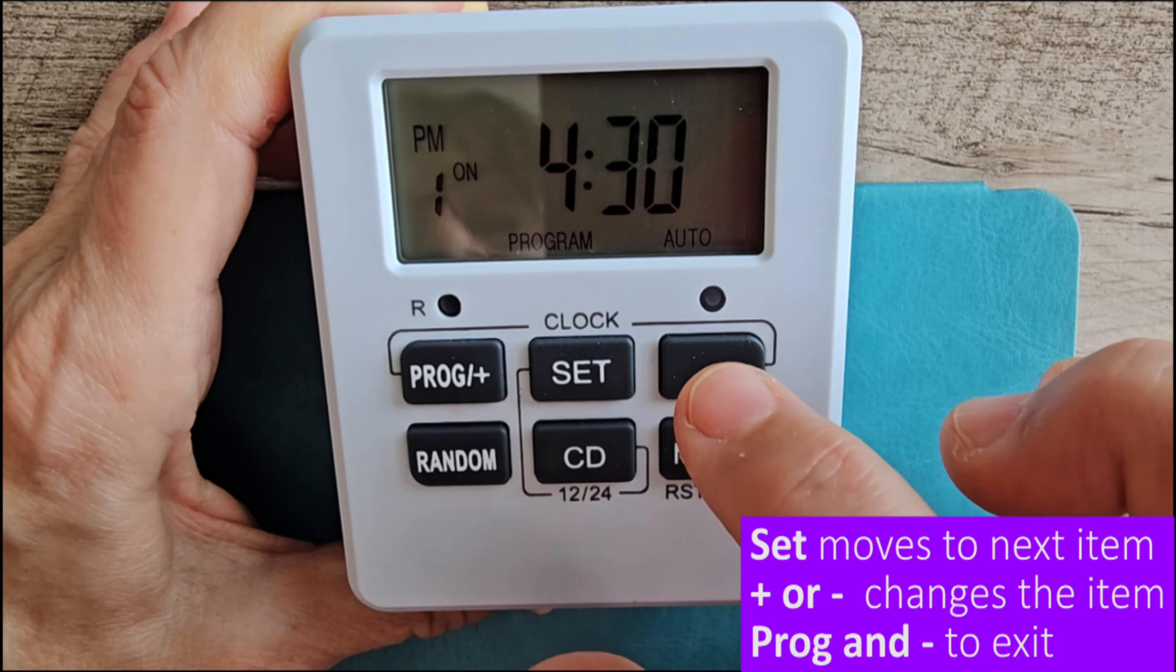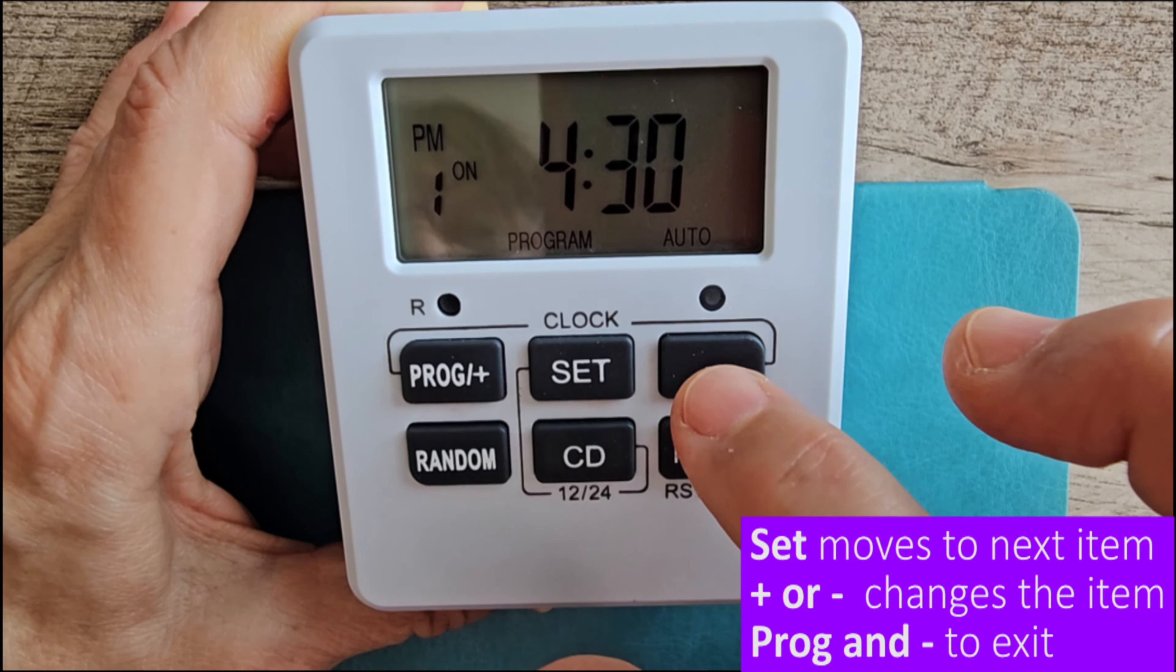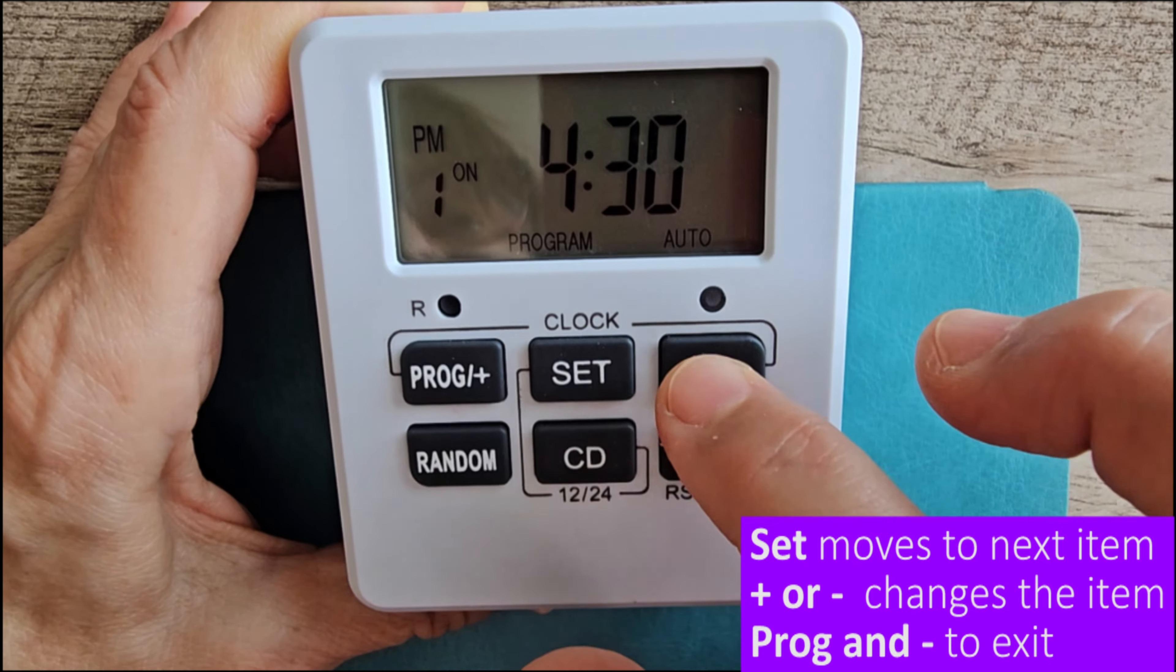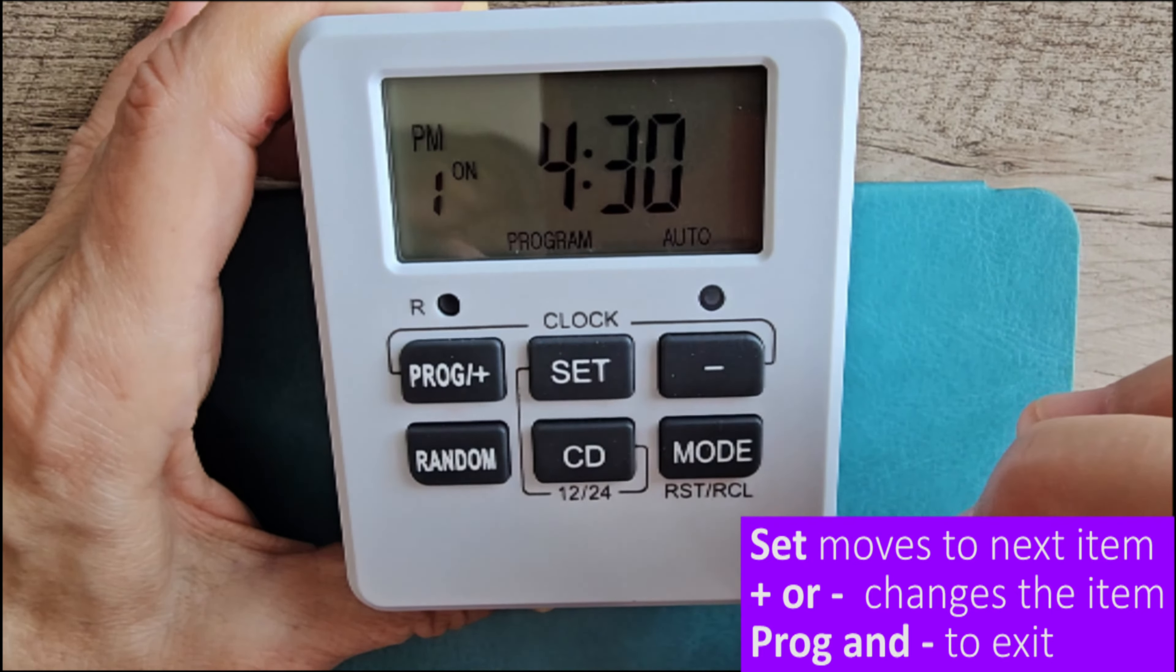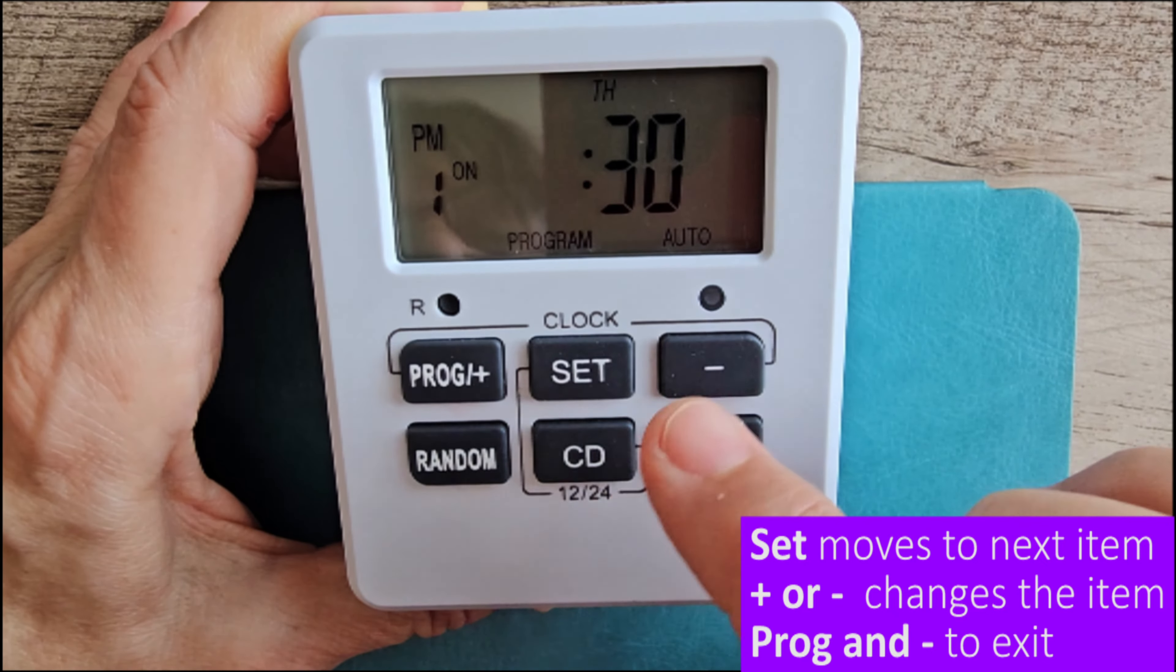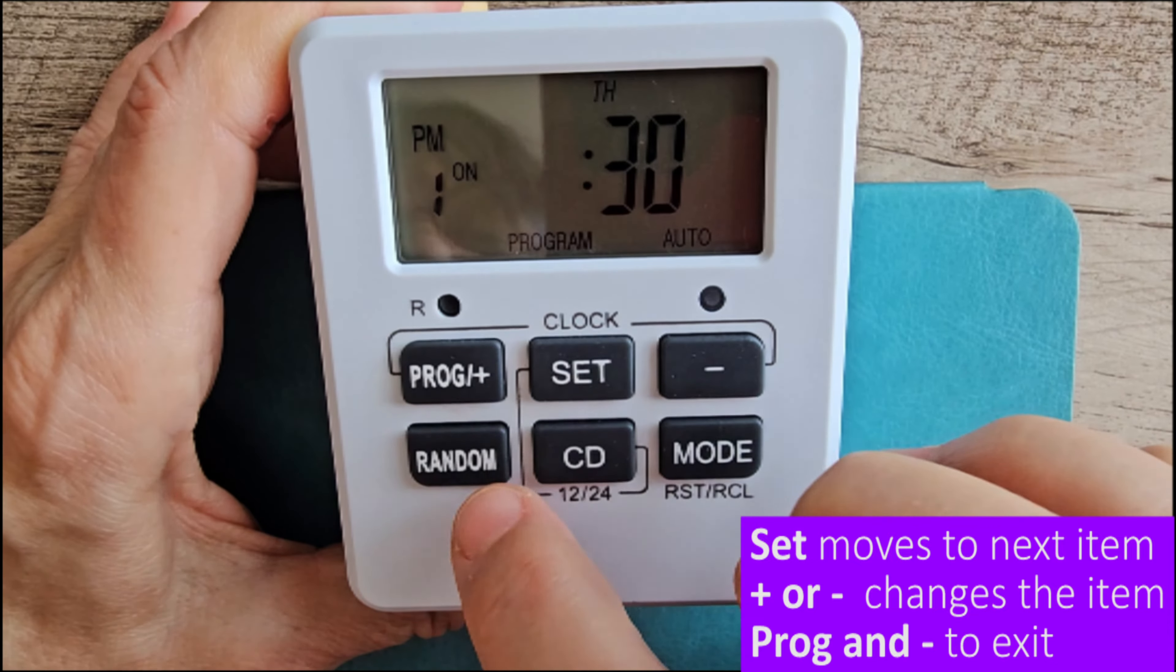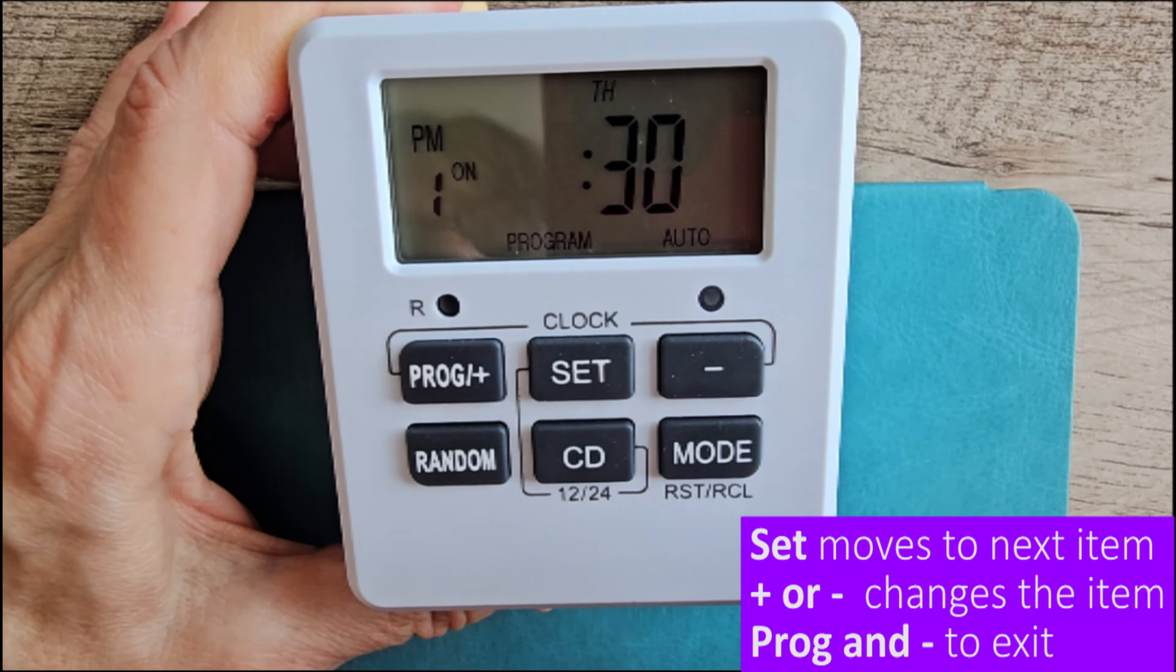I'm going to go back in and set up a program. One on. I want to set it. So press set and select the days. See how it has Monday flashing? Change it to Monday, Wednesday. There's a multitude of combinations. So you just go through until you're happy with whatever day it is. So I'm going to have it come on, say Thursday.